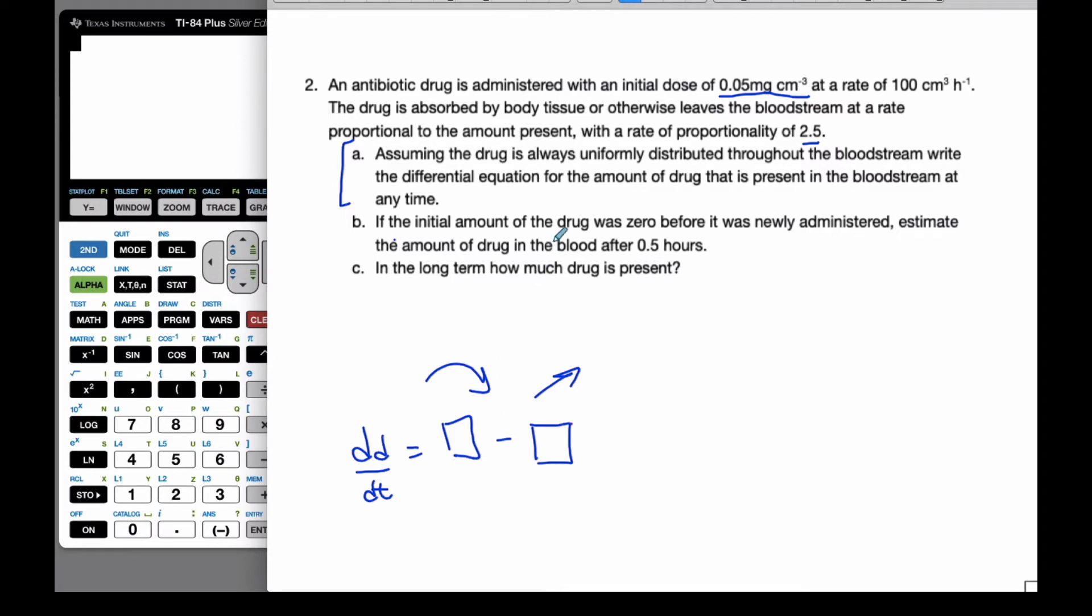Well, the rate going in is simply coming from here. This is how much drug is going in. And if I go 0.05 milligrams per centimeters cubed, and I multiply it by 100 centimeters cubed over hours, those centimeters cubed, and I can say that I'm getting 5 milligrams per hour.